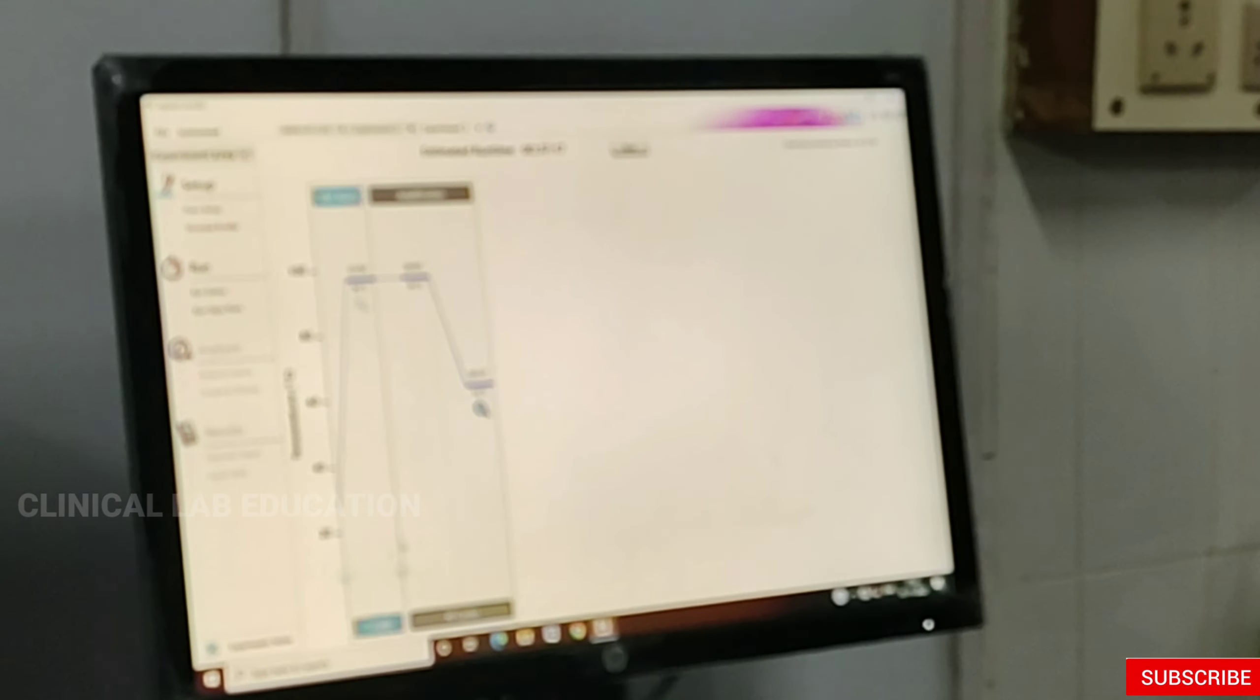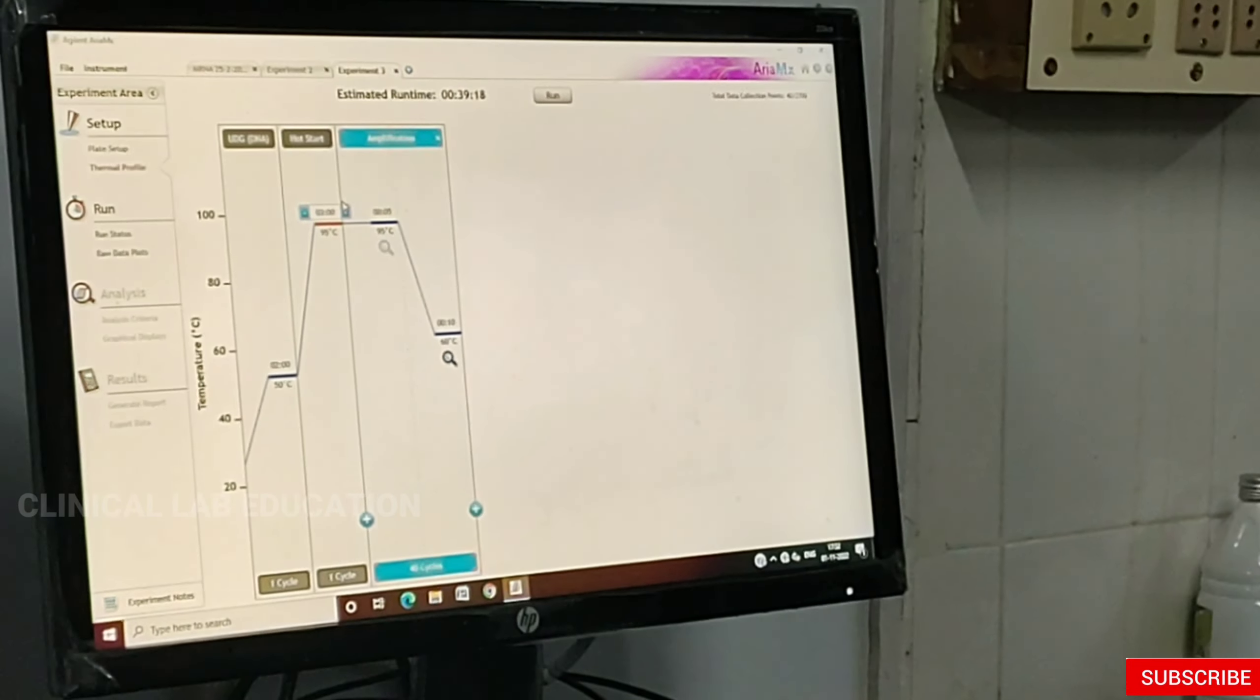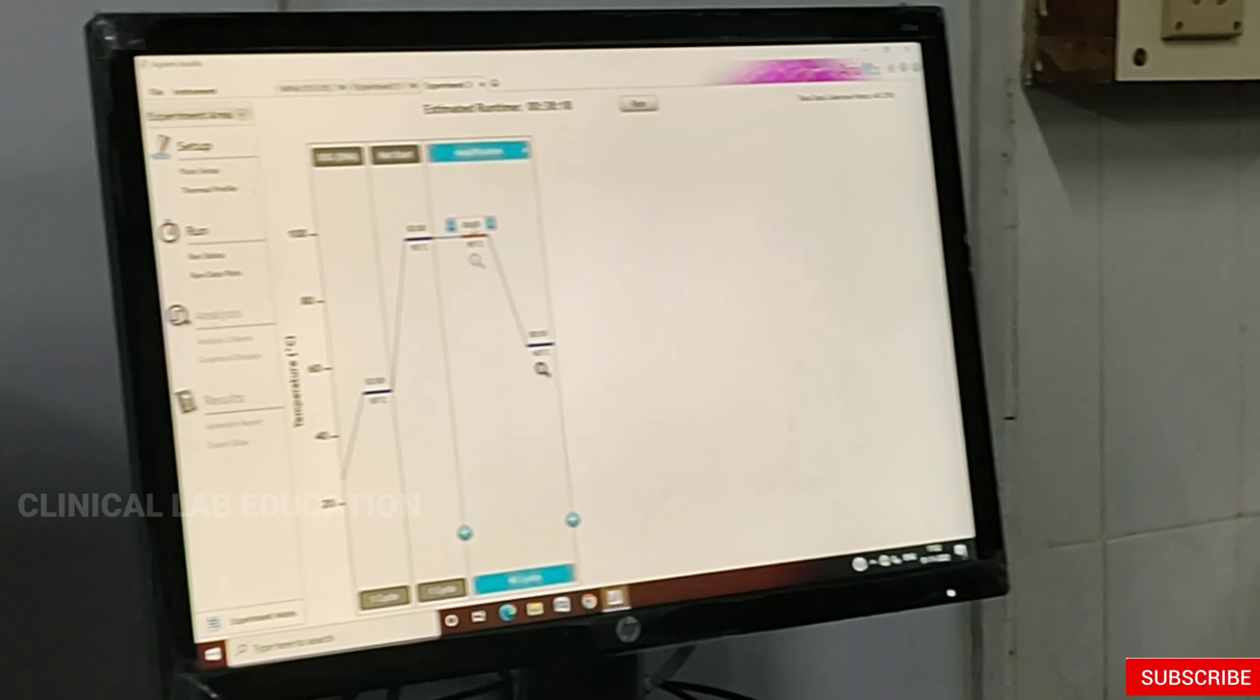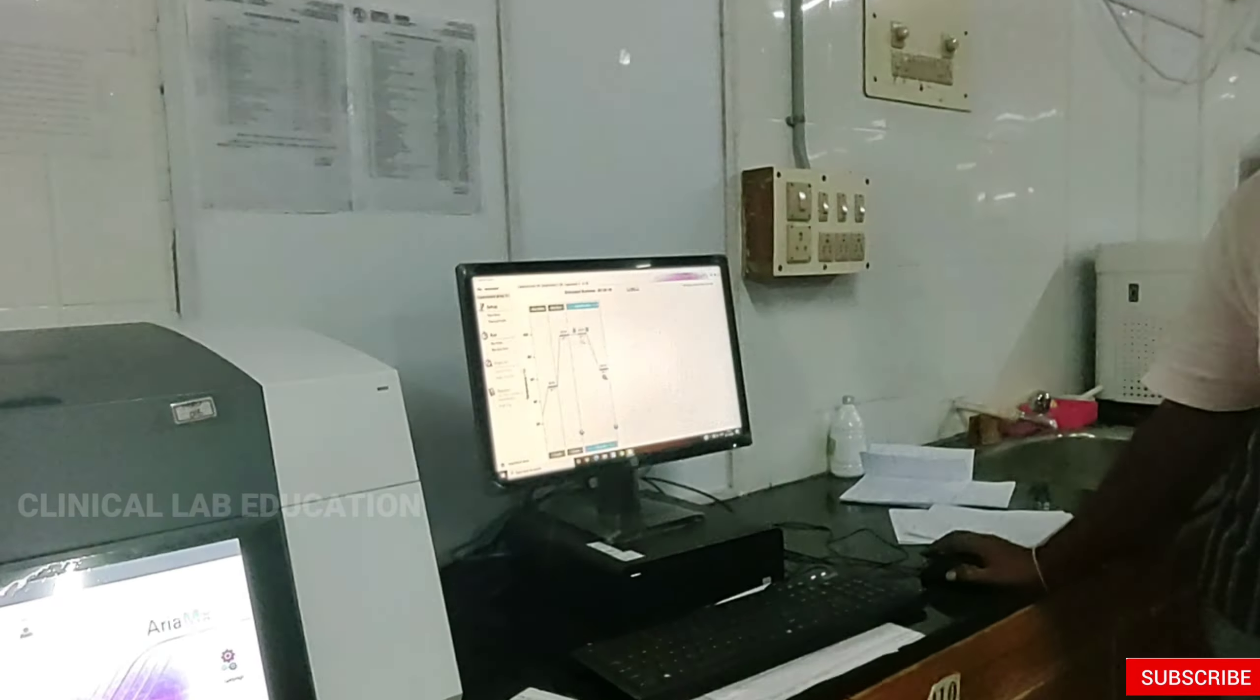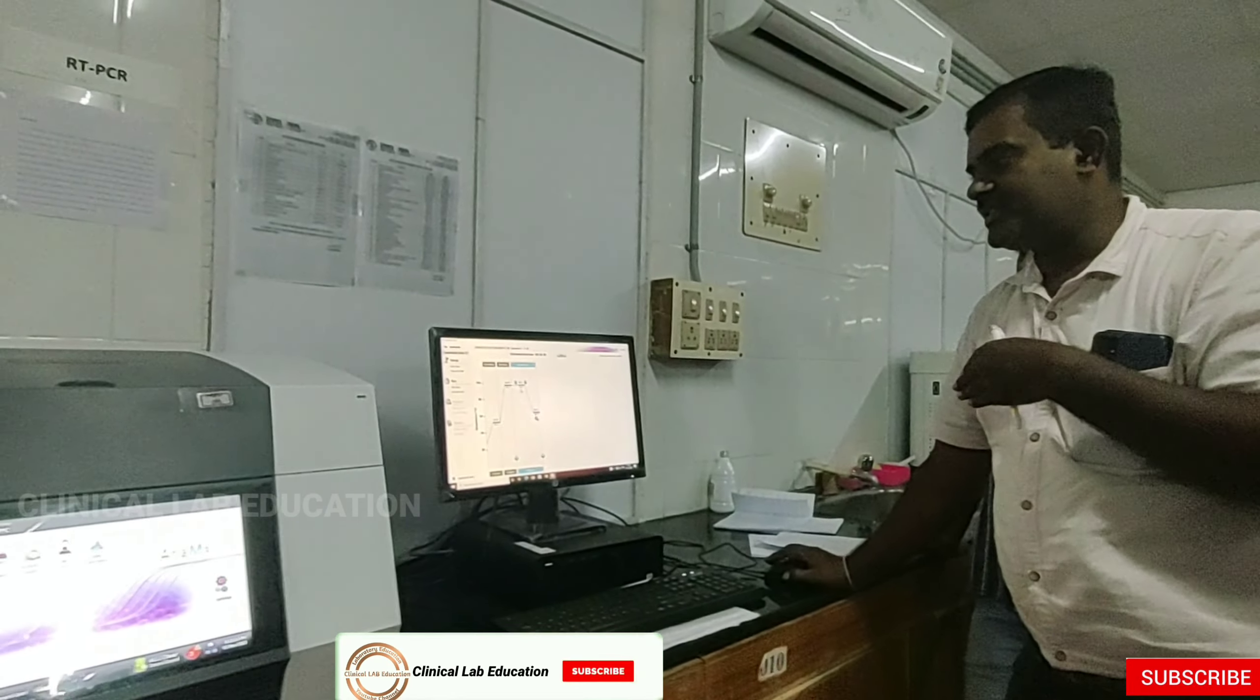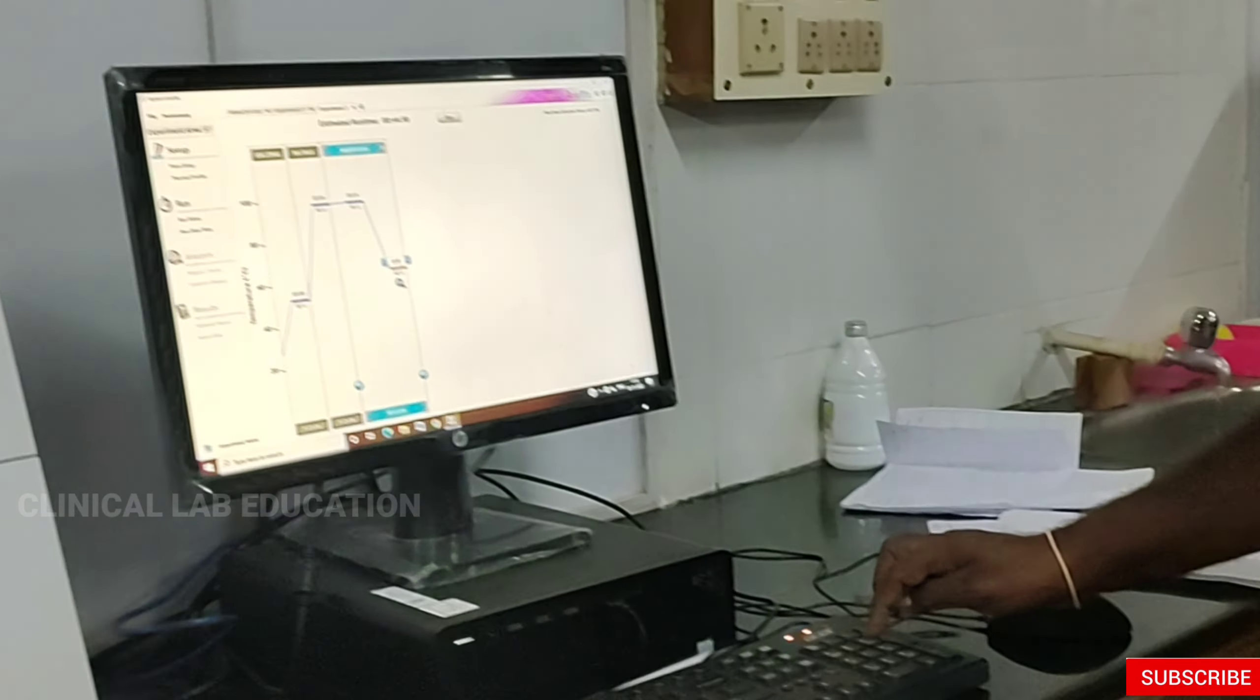Two minutes at 50 degrees. Then you can edit this one - two minutes at 95 degrees, and this is 15 seconds. Actually, for the protocol, the UDG activation, the hot start - we need to do this to create amplification. This is called amplification. Then the last is the closing step - that is one minute at 40 degrees.